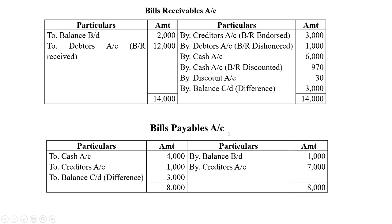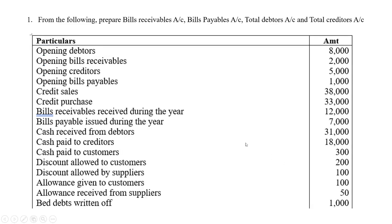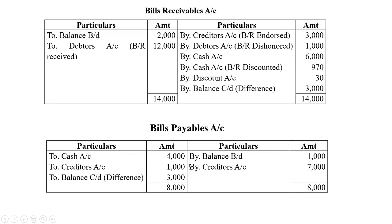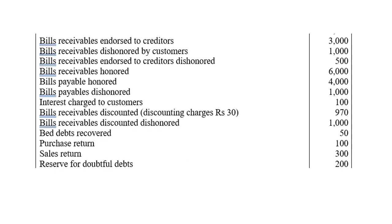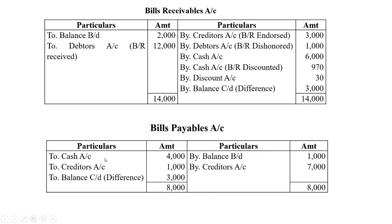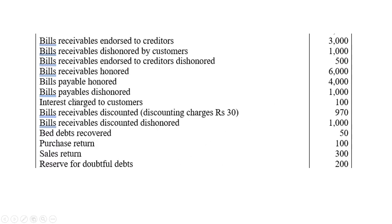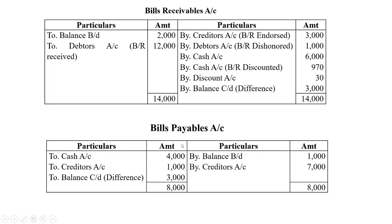For the bills payable account: the opening balance on the credit side — balance brought down — is 1,000 rupees. By creditors account — bills payable issued during the year — 7,000 rupees. To cash account — bills payable honoured — 4,000 rupees. To creditors account — 1,000 rupees. Bills payable dishonored — to creditors account — 1,000 rupees. Credit side total is 8,000 rupees; the difference of 3,000 rupees is the closing balance of bills payable, entered as balance carried down.